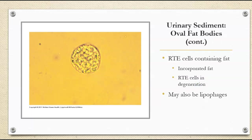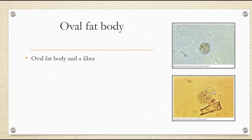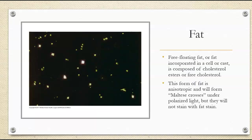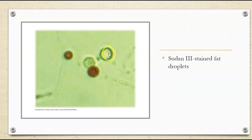We can also see oval fat bodies — these are basically renal epithelial cells that have fat incorporated into them. They're typically the renal cells that are degrading. We can also see lipophages as well. Here's an oval fat body, and here's a fiber next to an oval fat body — you can almost see the slight discoloration. The fat itself, if free-floating or incorporated into a cellular or cast element, is either composed of cholesterol esters or free cholesterol. This form of fat is anisotropic, so it will form the Maltese crosses under polarized light, but they won't stain with fat stain. You can see this is the Maltese cross, and here is the Sudan 3 that stained the fat droplets.